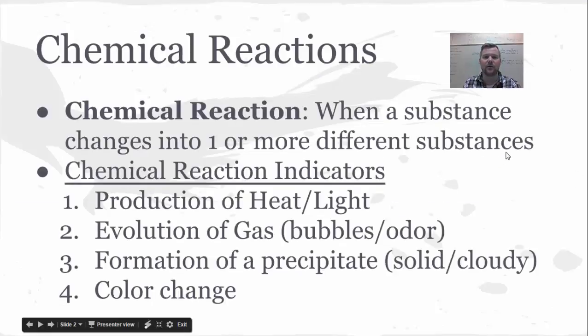So to start, a chemical reaction is going to be anytime we have a chemical change where one or more different substances become new identities. For a chemical reaction you need to be able to also tell when one's occurring and for our class we use four pretty common indicators. These aren't the only way to indicate a chemical reaction but these are true very often.